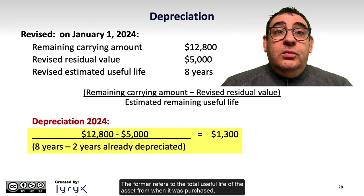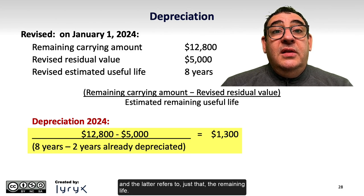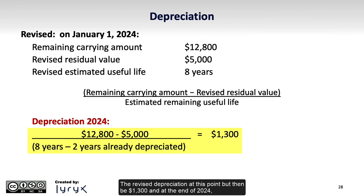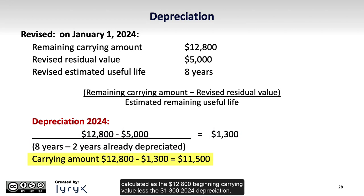The former refers to the total useful life of the asset from when it was purchased, and the latter refers to just that — the remaining life. So make sure that you read any questions carefully so you understand the wording of what's given to you. The revised depreciation at this point would then be $1,300. And at the end of 2024, the carrying value or net book value would be $11,500, calculated as the $12,800 beginning carrying value less the $1,300 depreciation.